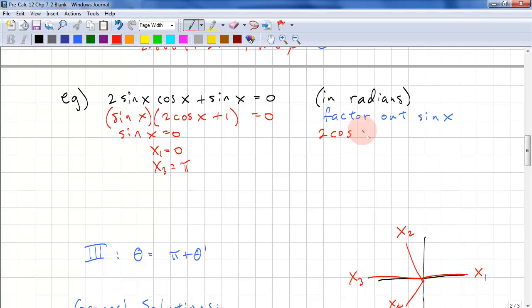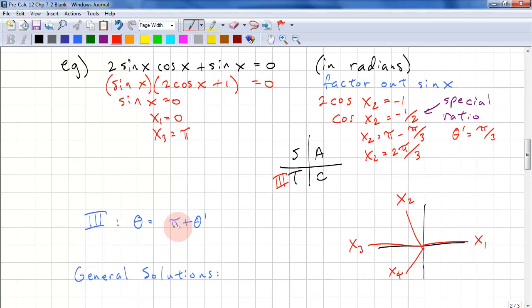Now we have 2 cos x2 equals negative 1. So cos x2 equals negative 1 half. We'll note that this is a special ratio. So theta prime equals pi over 3. And x2 equals pi minus the reference angle, which is pi over 3. So x2 equals 2 pi over 3. So we have x1, x2, x3. We need x4. And the reason why is we have all students take calculus. And we have cosine negative in quadrants 2 and quadrant 3. So we have an answer in quadrant 3. And the formula is theta is equal to pi plus theta prime. So we have x4 equal to pi plus pi over 3, which is 4 pi over 3.